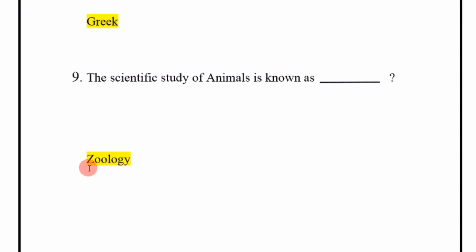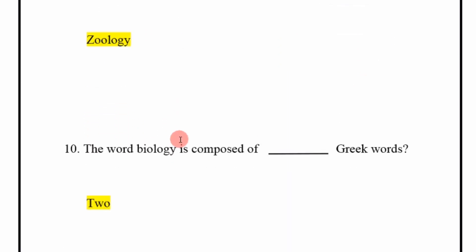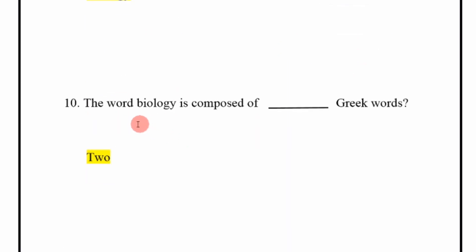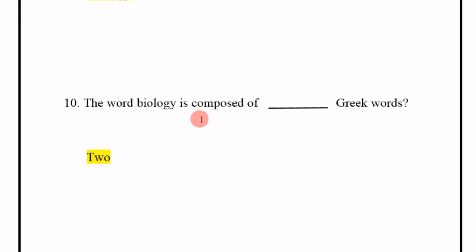The scientific study of animals is known as? Answer: Zoology. The word biology is composed of how many Greek words? Answer: Two.